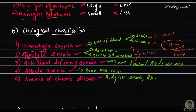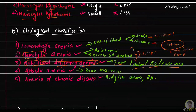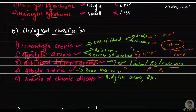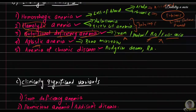Next is nutritional deficiency anemia, caused due to deficiency of iron, protein, B12, or folic acid — all required for normal hemoglobin production. When these are absent, hemoglobin synthesis is impaired. After that we have aplastic anemia, which is a bone marrow disorder. Lastly, anemia of chronic disease due to rheumatoid arthritis, tuberculosis, chronic renal failure, or Hodgkin's disease.